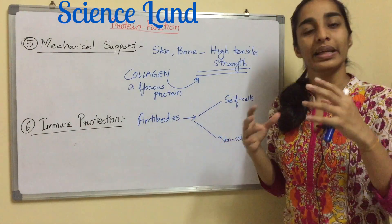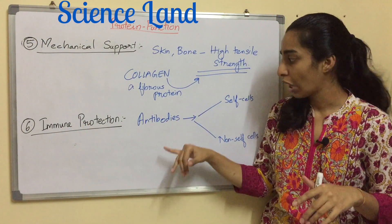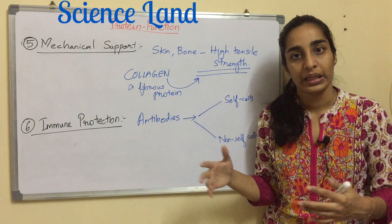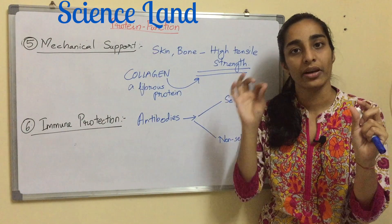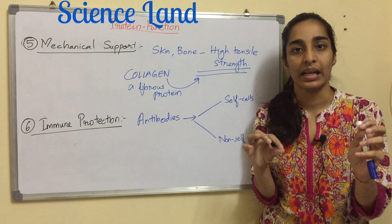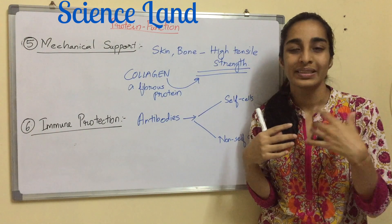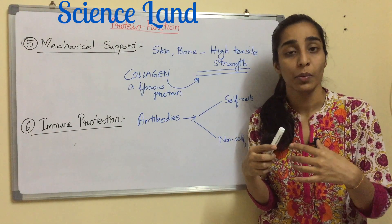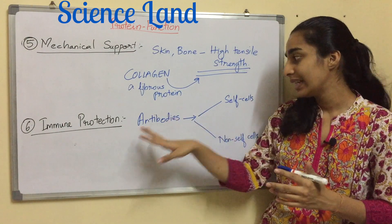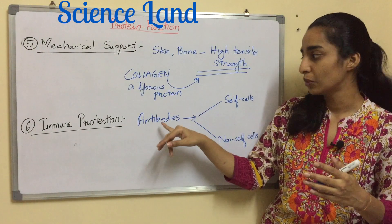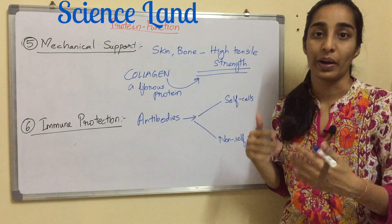Sixth function: immune protection. There are certain specialized proteins which are antibodies. Antibodies have the ability to recognize between self and non-self — self meaning a cell belonging to the human body, and non-self meaning a foreign particle, a virus, or a bacteria which will cause disease. These specialized proteins, the antibodies, distinguish between the cells and provide immunity.